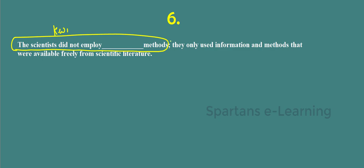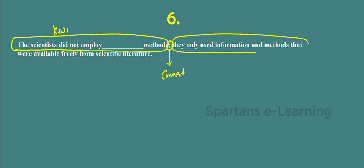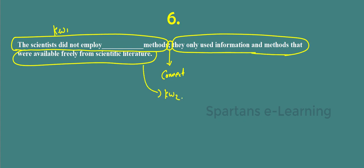The connector here can be a word, a phrase, a clause, a sentence, or even punctuation can also act as a connector. Now, they only used information and methods that were available freely from scientific literature. You want to know what is your first keyword — you have a connector, and you have a second keyword.